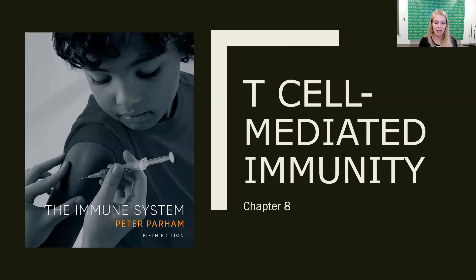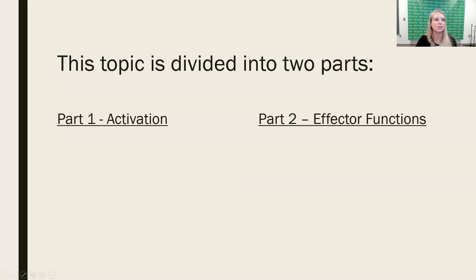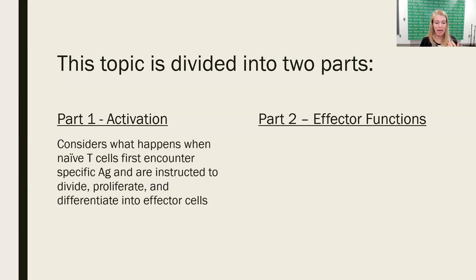We're going to divide this up into two big lectures. The first lecture is going to be all about activation. It's going to be a big one. There's going to be a lot of information in it because it's going to consider what happens when those naive T cells that were developed and tested through development first encounter their specific antigen and the signals that they get that tell them to proliferate, to differentiate, and to go on to become effector T cells. That will be the first big, and so it's a big doozy of a lecture.